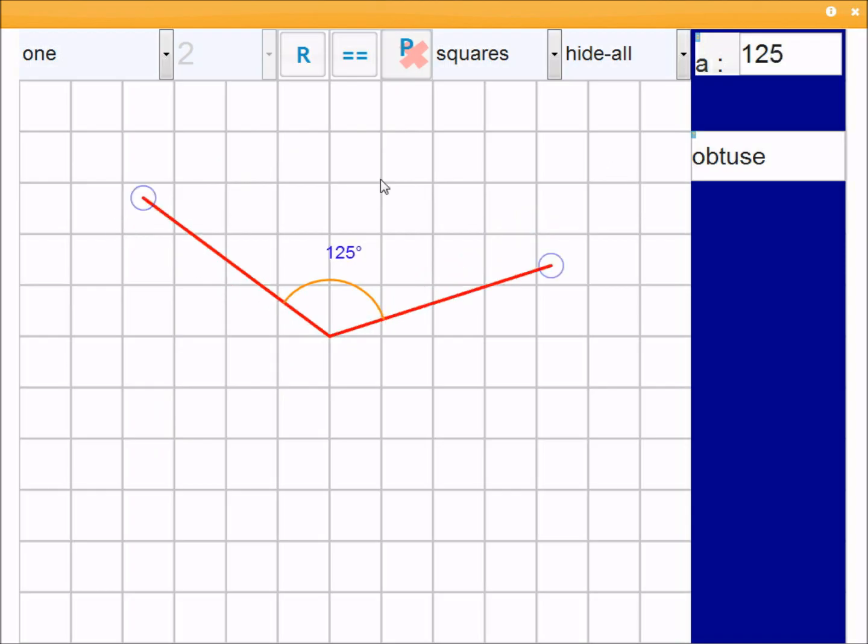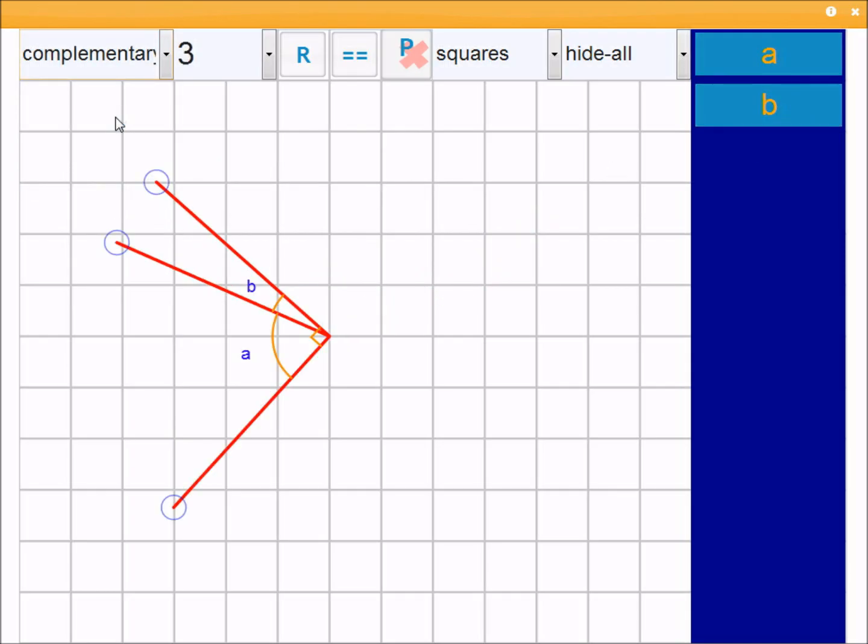So now let's look at the next mode, which is complementary. So straight away, we get a random problem. In this case, because this is selected as hide all, letter A and letter B are both hidden.